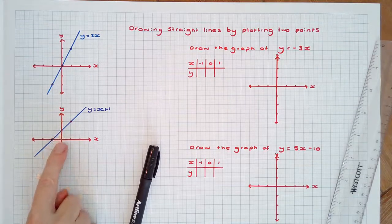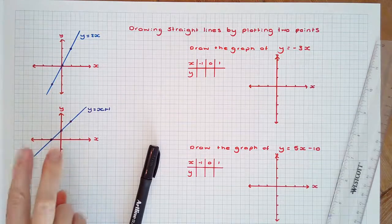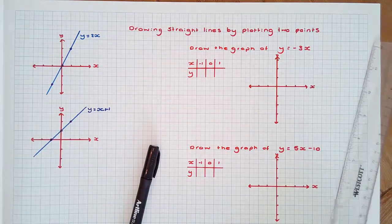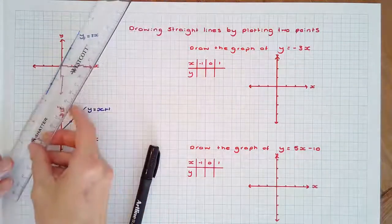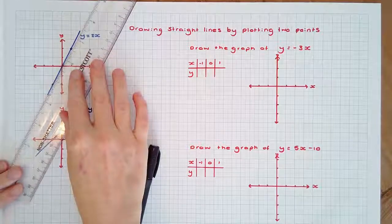In order to have drawn these graphs, only two coordinates need to have been plotted and a line drawn through the points. But it's useful to do a third point just as a check.